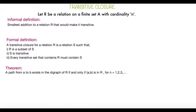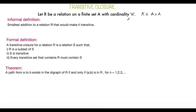In this video we will talk about the transitive closure of a relation. We have R, a relation on a finite set A, where the cardinality of A is n. This means that R is a subset of the Cartesian product of A. We will start with an informal definition.